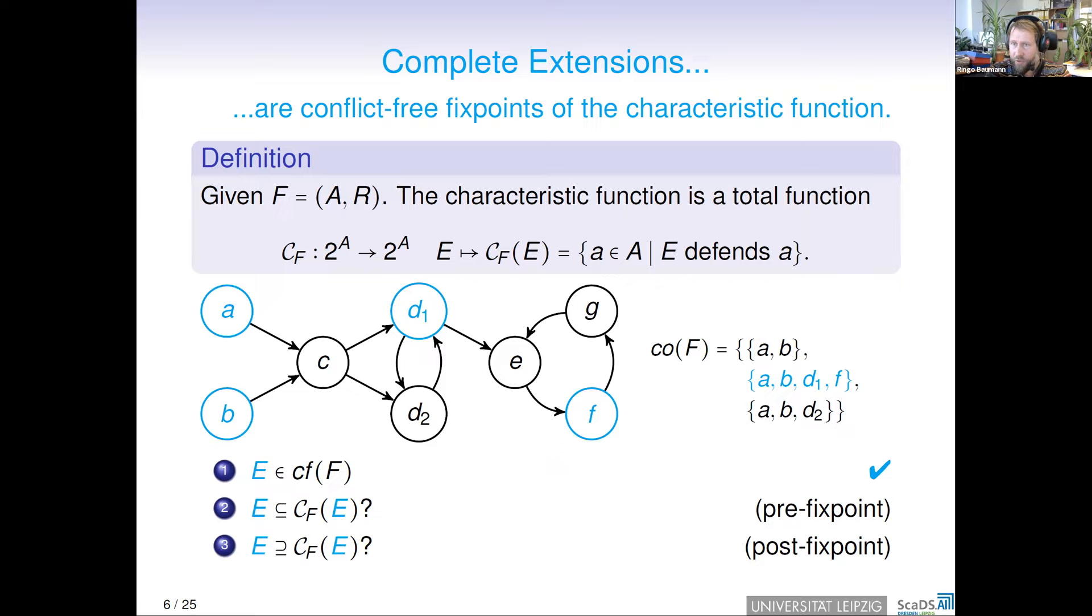Then the pre-fixpoint. Here we have to check whether all arguments in E are defended by E. A, B is defended by E because E counter-attacks all attackers of A, B—in fact there are no attackers of A and B. D1 is defended by E because C attacks D1, and this is counter-attacked by an argument contained in E, maybe by A for instance. D1 is also attacked by D2, but this is counter-attacked by D1. The same for F.